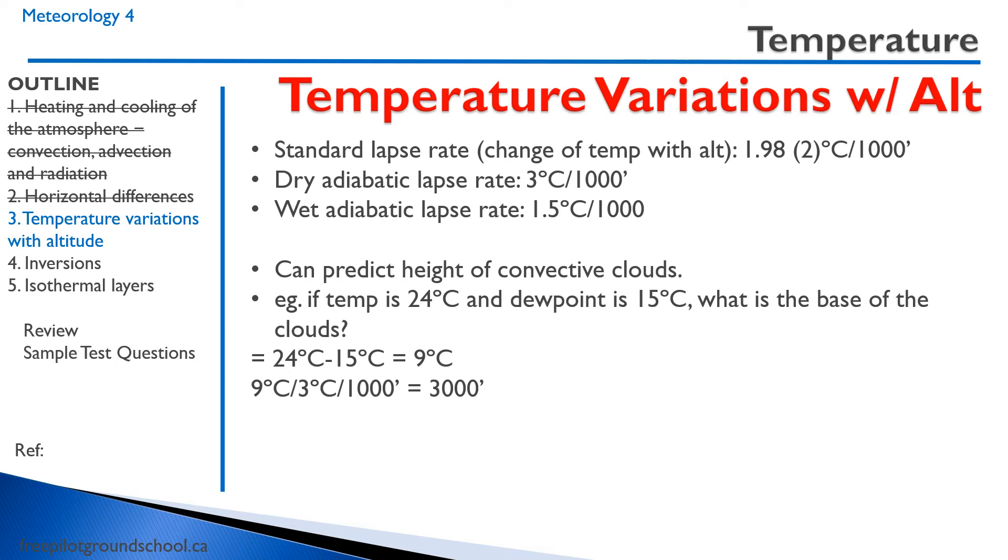So the temperature dew point spread, 24 minus 15, is 9 degrees Celsius. We can assume that it's dry, so we have 3 degrees per thousand feet. So we go 9 degrees divided by 3 degrees per thousand feet equals 3,000 feet. So the base of the convective clouds are going to be 3,000 feet.